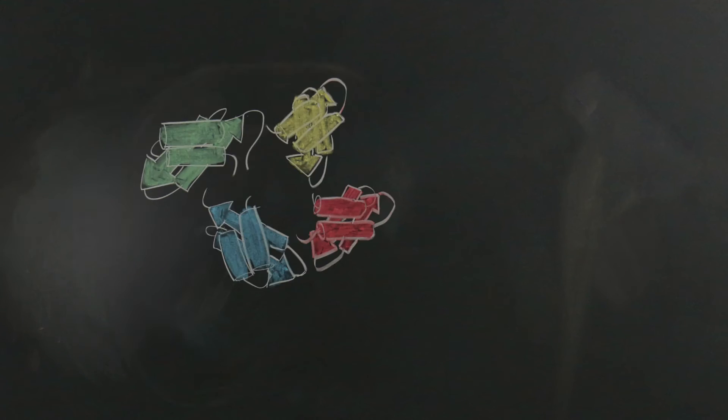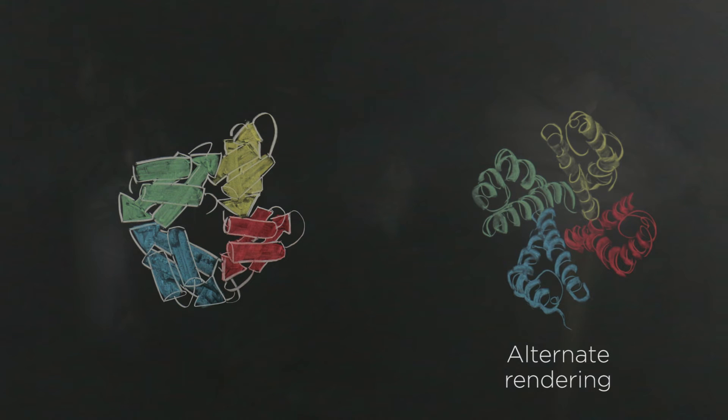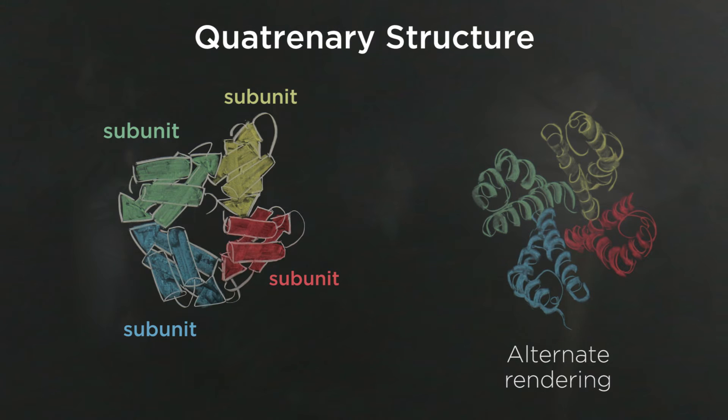Many proteins however are made up of multiple polypeptides. Each polypeptide within such a protein is referred to as a subunit of that protein. When two or more subunits interact to form a functional protein, this gives rise to the quaternary confirmation.